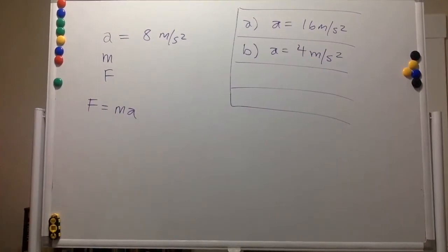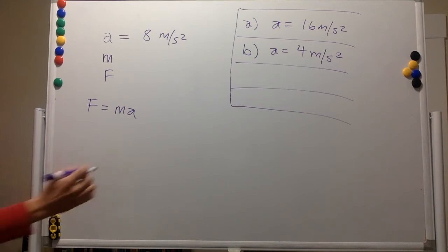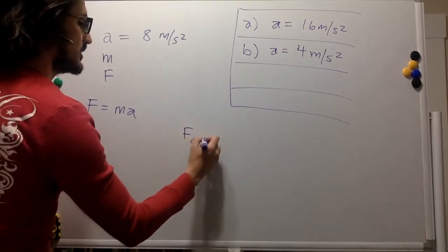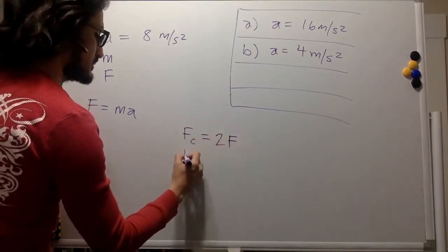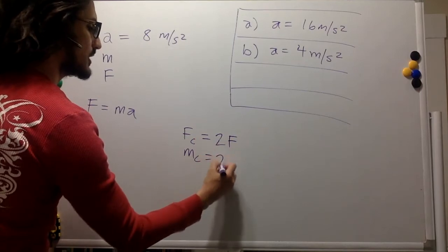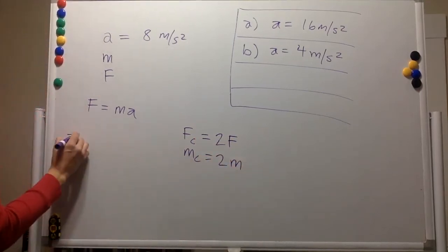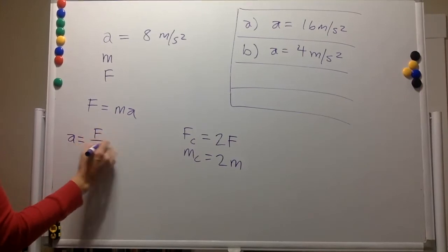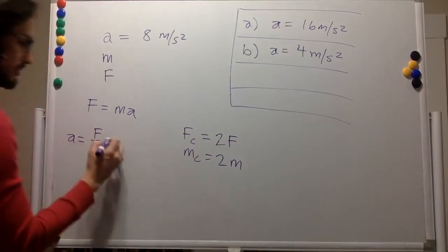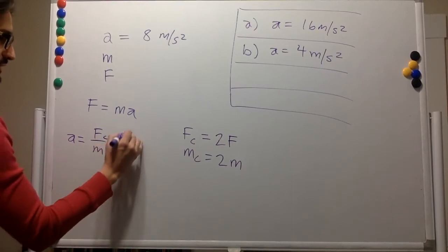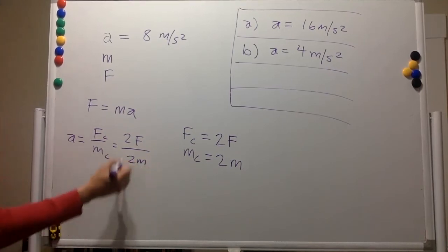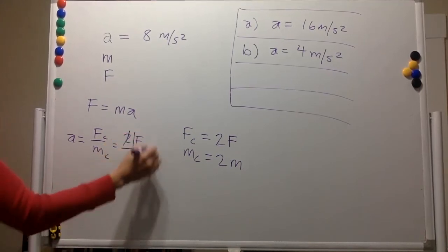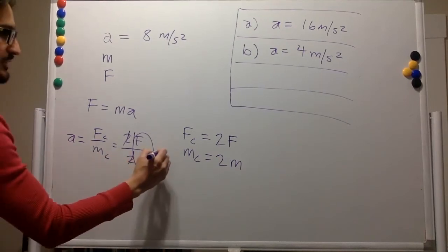In part C, both the force and the object's mass are doubled. So force C is twice the regular force and mass C is twice the regular mass. The acceleration is force divided by mass, so in this case it's 2F divided by 2M.